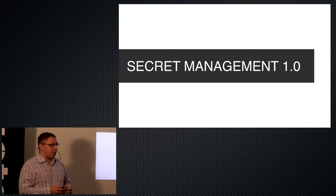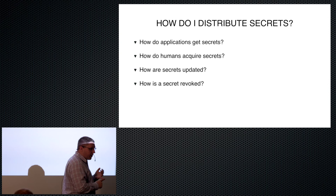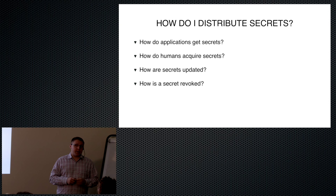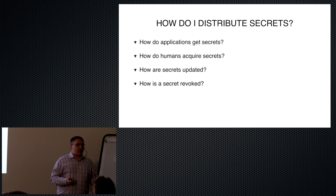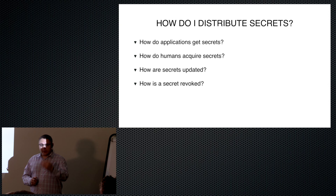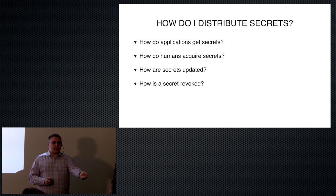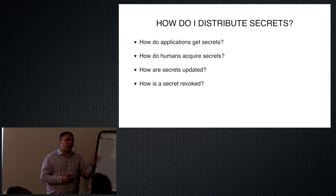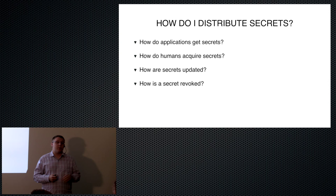Let's talk about secret management 1.0. We have secrets like database credentials — how do we get those into an application? Traditionally the answer has been you either hard-code them or use configuration management to lay them down at runtime. How do humans acquire those secrets? Operators and application engineers need access to those secrets. How do we invalidate those secrets? If I hand you the database password, how long is that good for? What are the policies around rotating the database password?